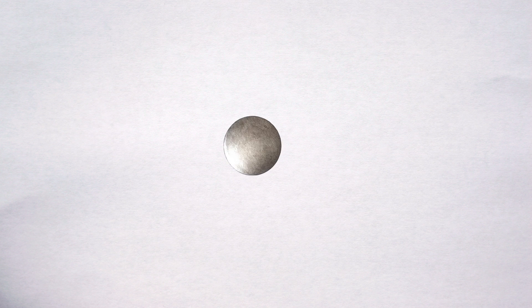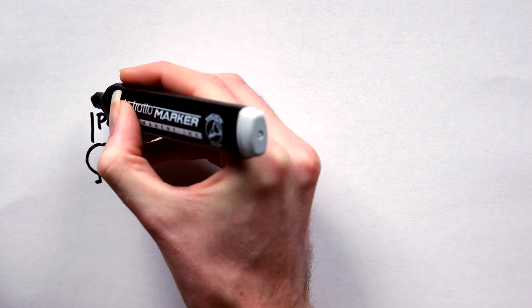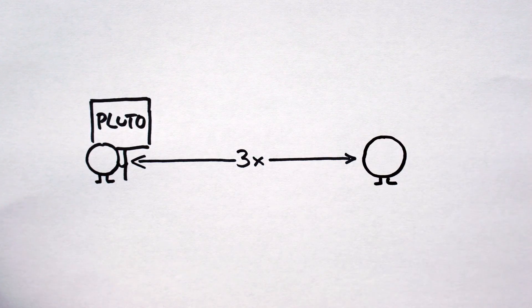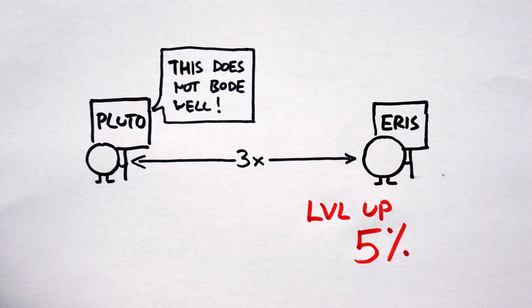Meet Eris, the fifth dwarf planet. Discovered in 2005, Eris orbits at three times the distance of Pluto, and is crucially about 5% larger than Pluto.